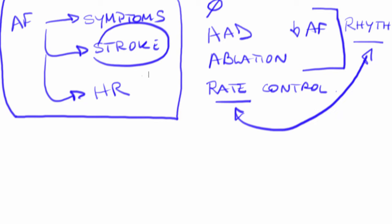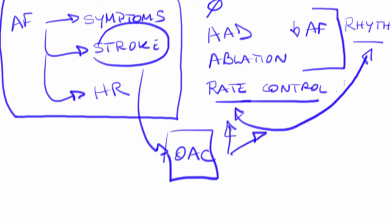The third, which is the risk of stroke, is always treated with oral anticoagulation unless there's a contraindication. No matter what you do—rate or rhythm control—you still have to do oral anticoagulation because the risk of stroke does not go down with either approach.